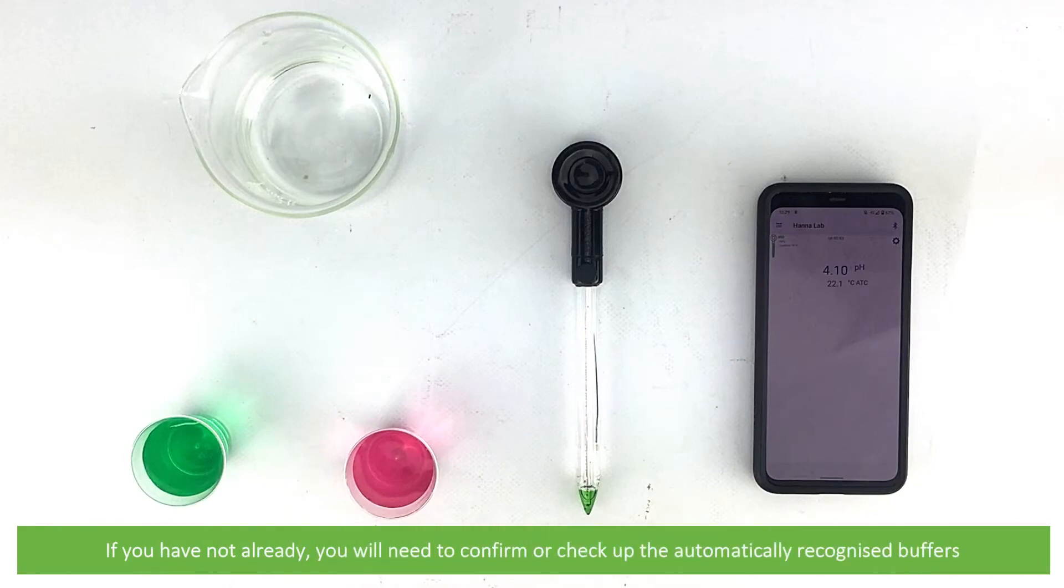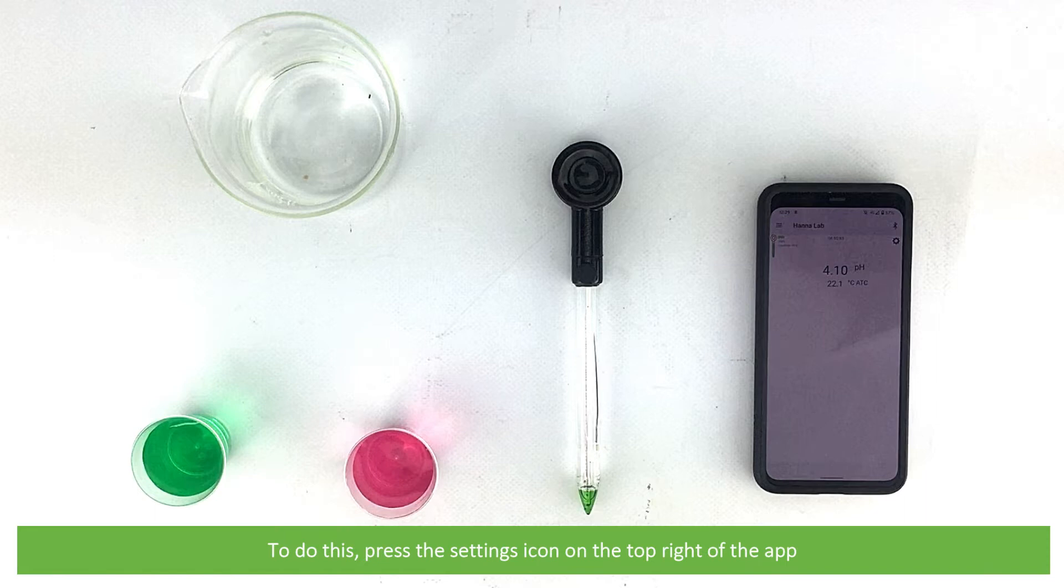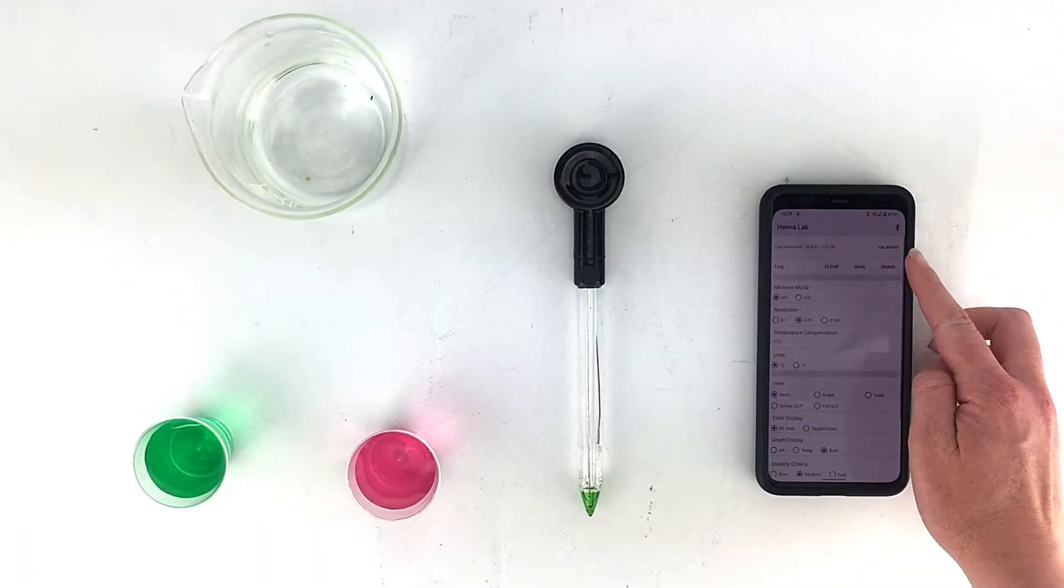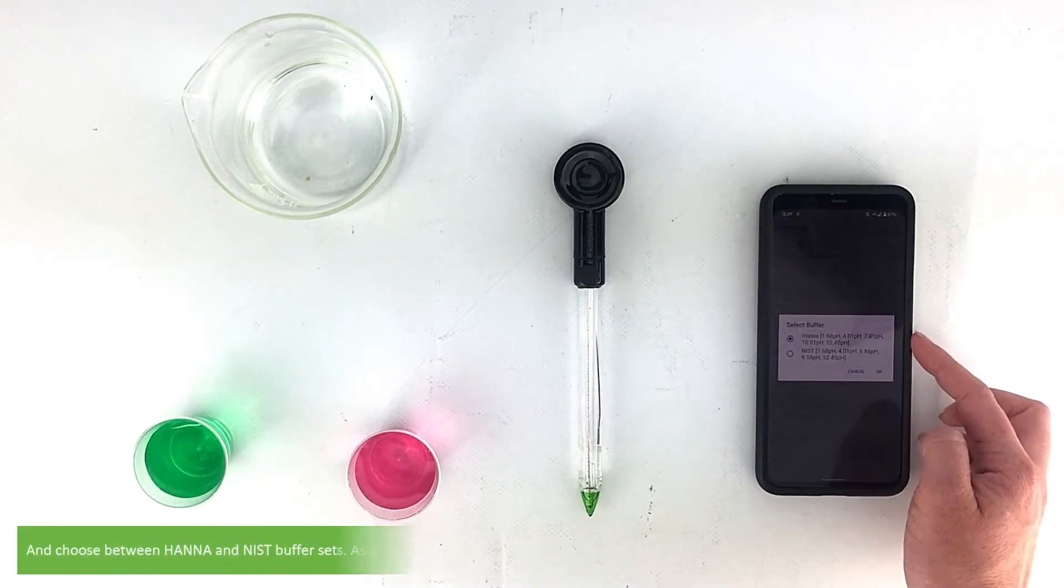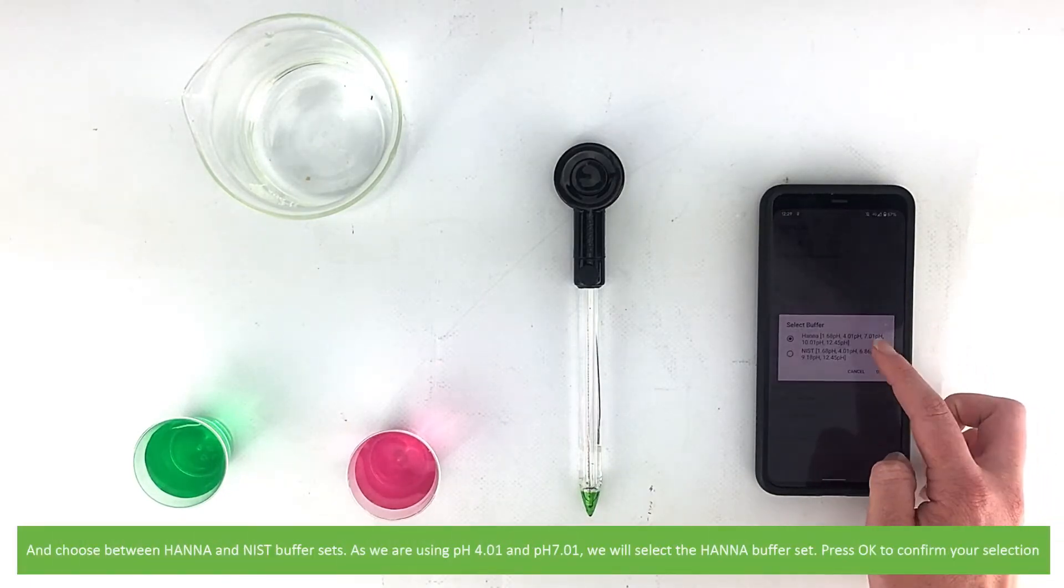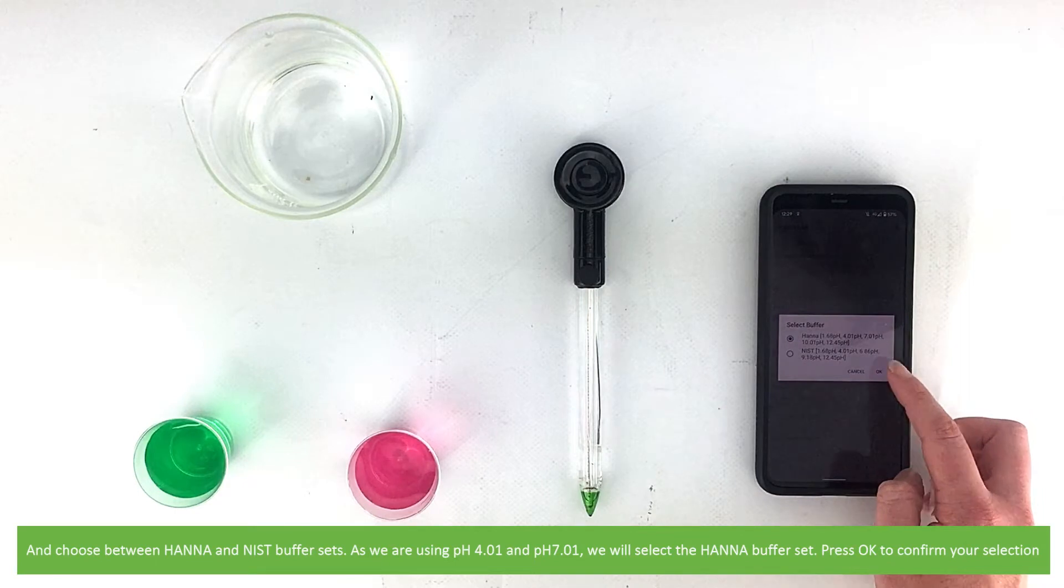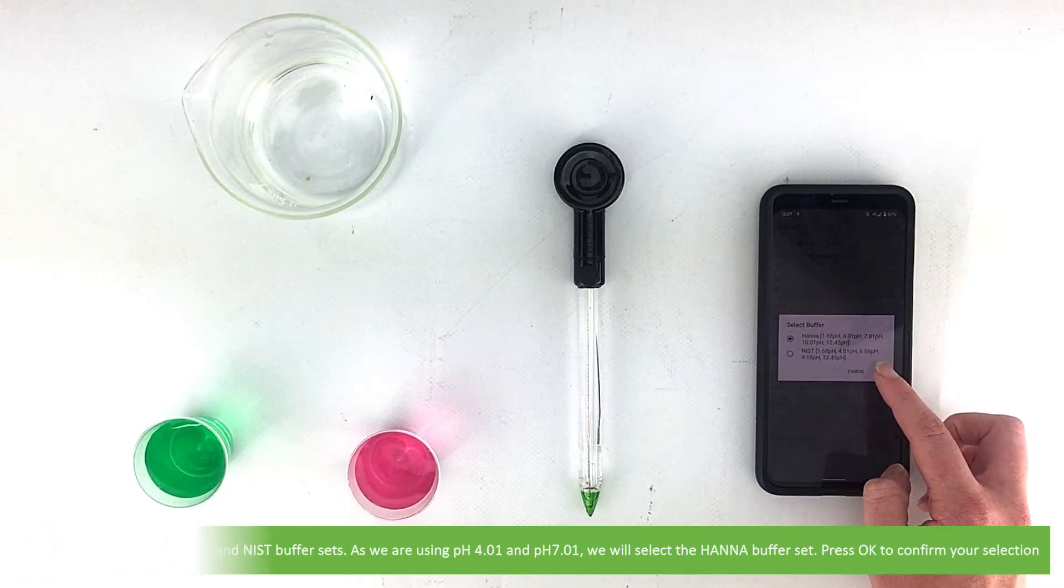If you have not already, you will need to confirm or check the automatically recognized buffers. To do this, press the settings icon on the top right of the app. Scroll down to calibration buffers and choose between HANA and NIST buffer sets. As we're using pH 4.01 and pH 7.01, we will select the HANA buffer set. Press OK to confirm your selection.